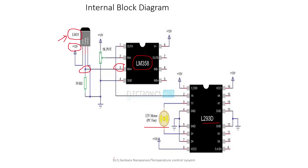Looking at the diagram, the enable pin and pin 16 (power supply) are connected to +12V. Pin 8 is also connected to +12V power supply. Pins 12 and 13 are ground signals, and pins 4 and 5 are also ground signals. The fan is connected between pin number 3 (1Y) and pin number 6 (2Y).